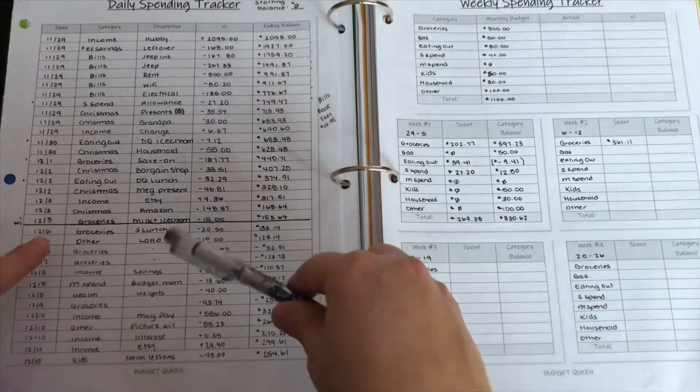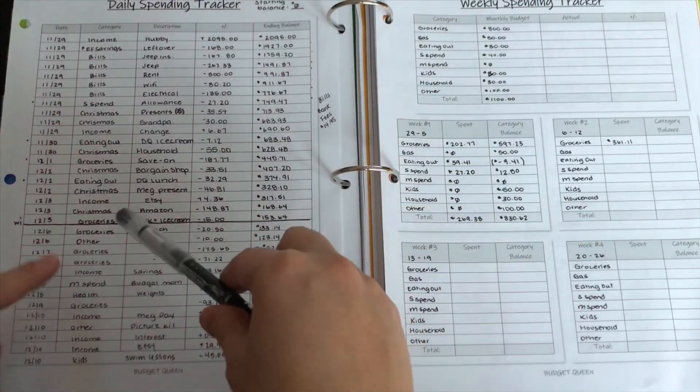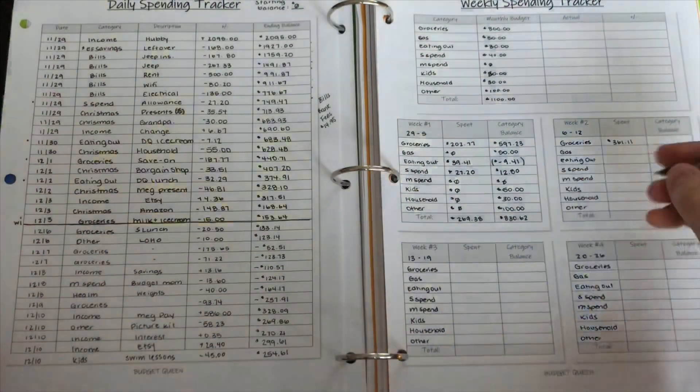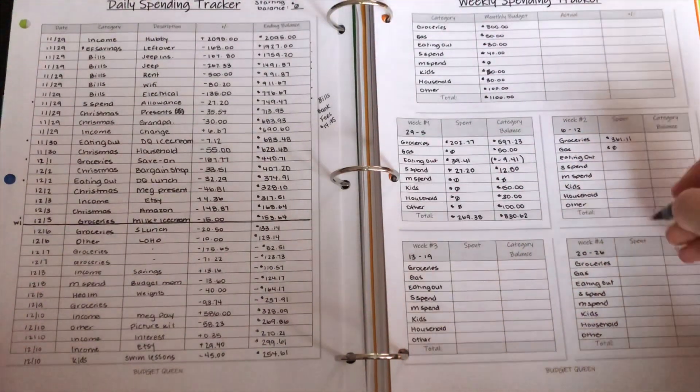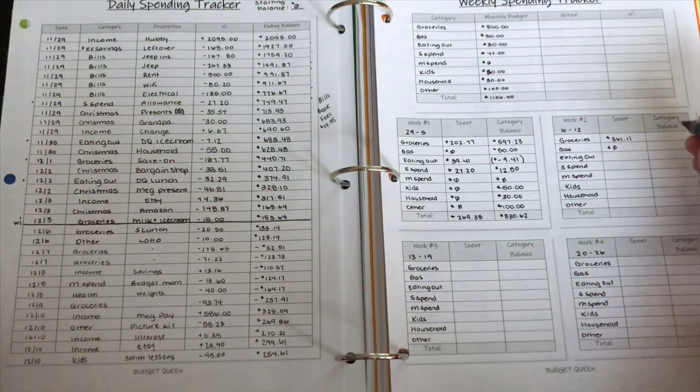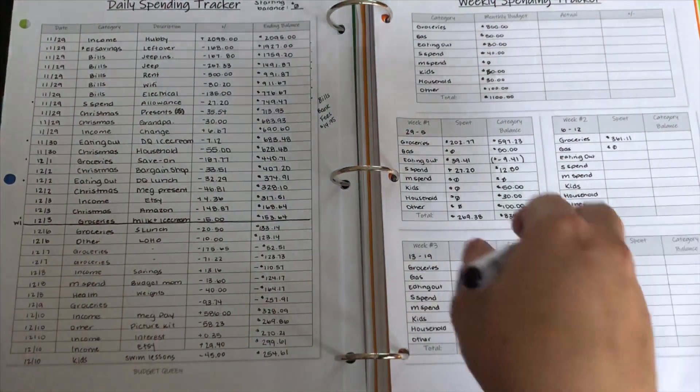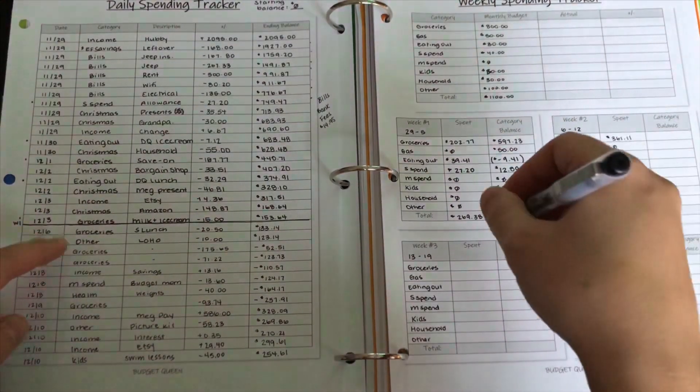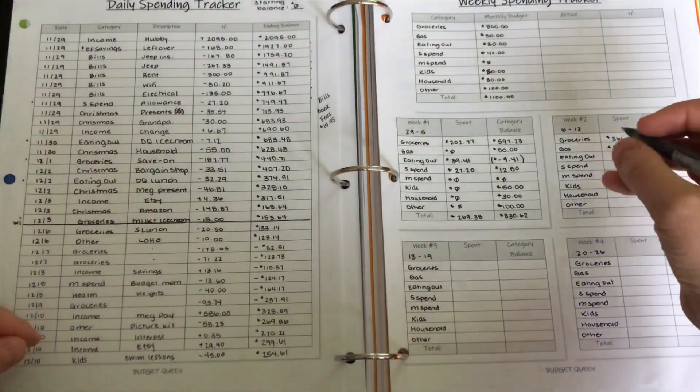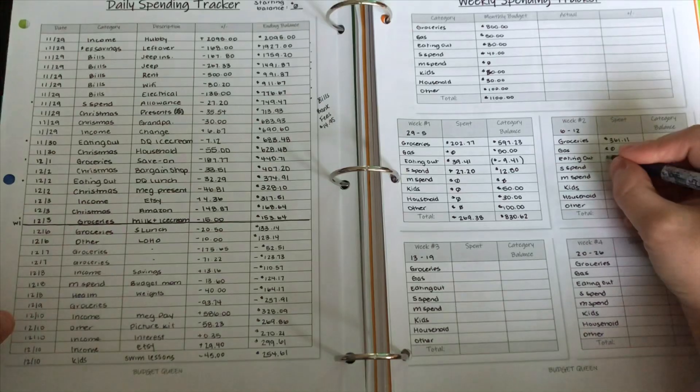Next category is gas. And as you can see here, there are no gas expenses. So we're just going to put zero here. We're going to do this spent column first and then we'll do the category balance next. So eating out, you can see that we didn't eat out this week. So that is good. We'll put zero here.